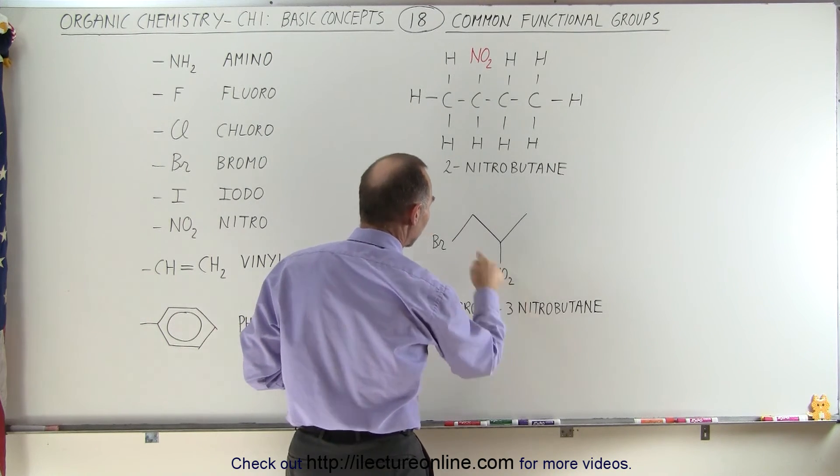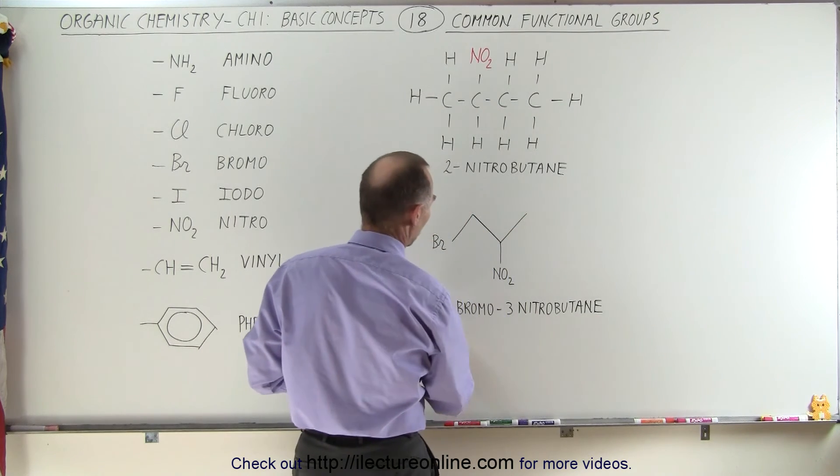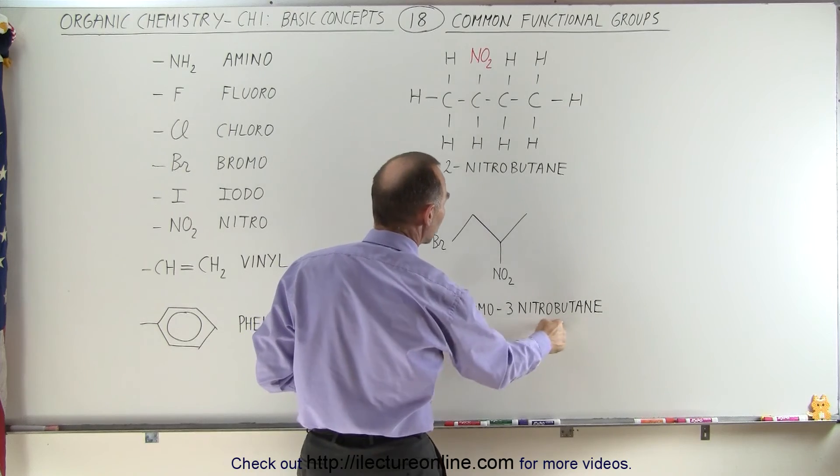3-nitro, and since it's connected to a chain of four carbons, we call it butane. So 1-bromo-3-nitrobutane.